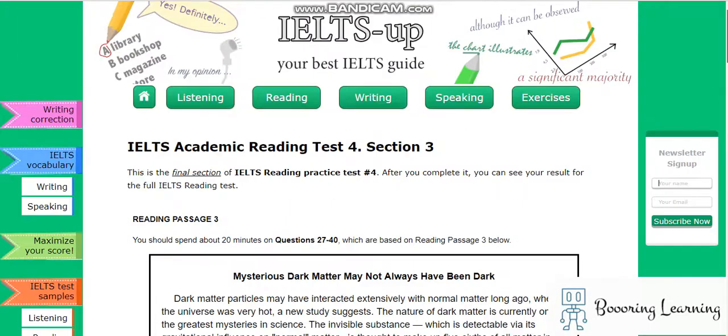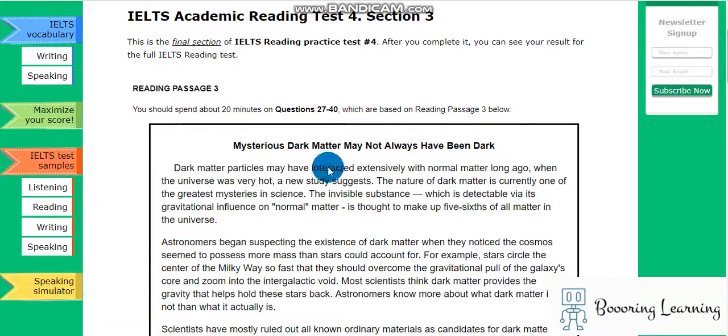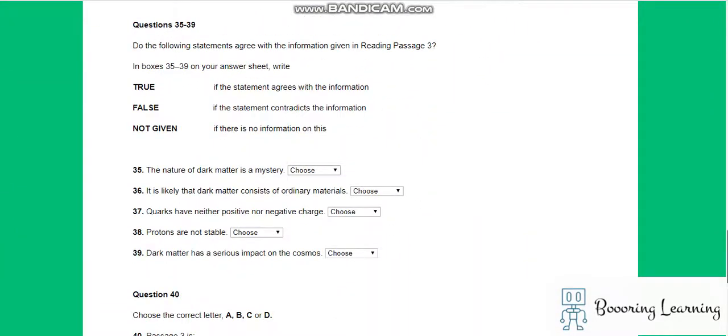Hi, hello, welcome to ALS academic reading test for section 3. The topic is mysterious dark matter may not always have been dark. Now we will answer questions 35 to 40.